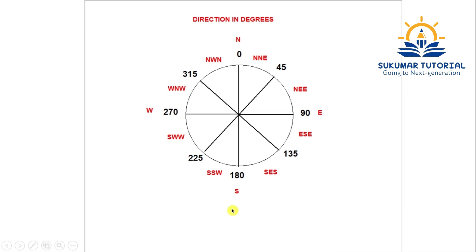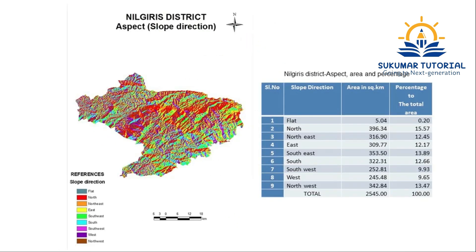So there are eastern, southern, western, and northern slopes. When you make a map, the output will look like this. For example, I have done a Nilgiri district slope direction map. I have classified slopes into different directions: flat area, north, northeast, east, southeast, south, southwest, west, and northwest. Once you classify, you can find out the area covered in each direction and what percentage it covers of the total area of the basin or district. This is the basic thing.